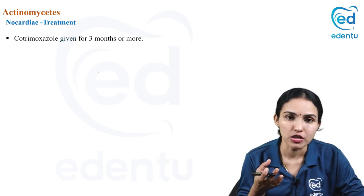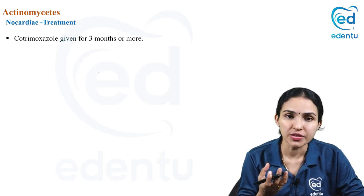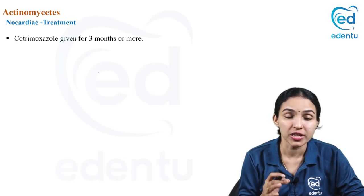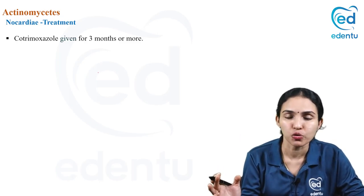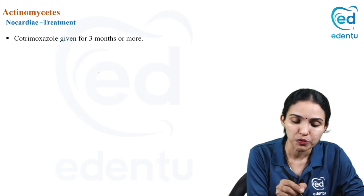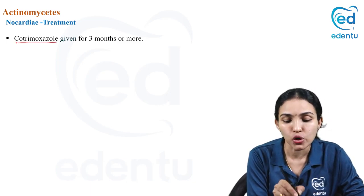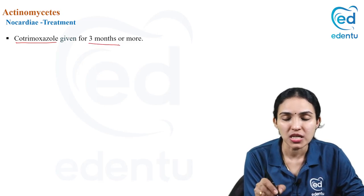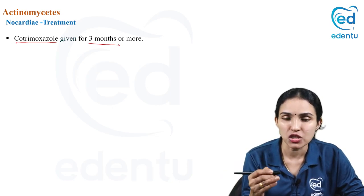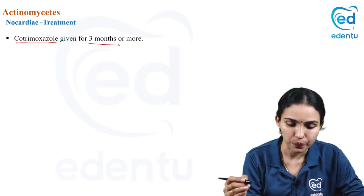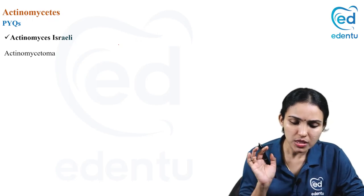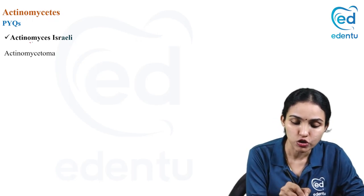For treatment of nocardia infection, surgical debridement can be performed. In contrast to eumycetoma, where surgical removal is often necessary, actinomycetoma responds well to antibiotics. The drug of choice is cotrimoxazole, given for three months or more. This is the preferred treatment for mycetoma caused by nocardia and other actinomyces members.